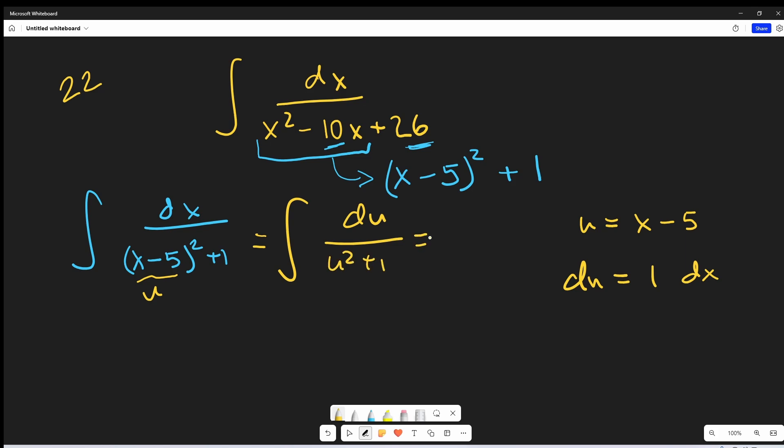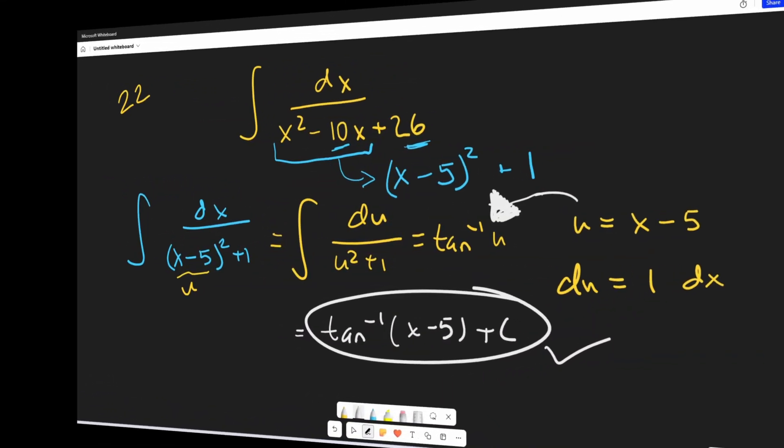But this integral here, this is actually just arctan of u. So then all we need to do is just back substitute in order to finish this thing off. And so for my final solution, we're just going to have arctan with x minus 5, give it a plus c, and that's it. Okay, really quick and easy.